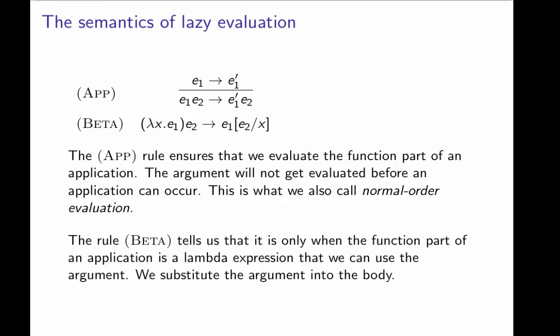And this is also what we know as normal-order evaluation. And then, of course, we still have beta reduction. Beta reduction saying that whenever we have an application where the applicand is a lambda abstraction, then we can substitute the actual parameter E2, the argument, into the body of E1. So it's the use of these two rules that makes sure that we have lazy evaluation as a parameter passing mechanism.